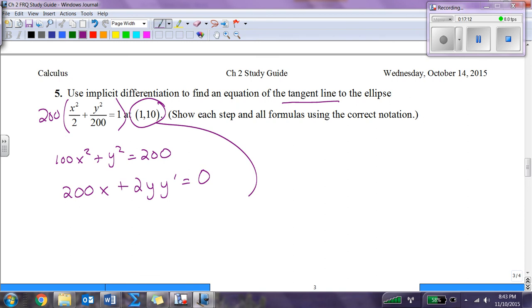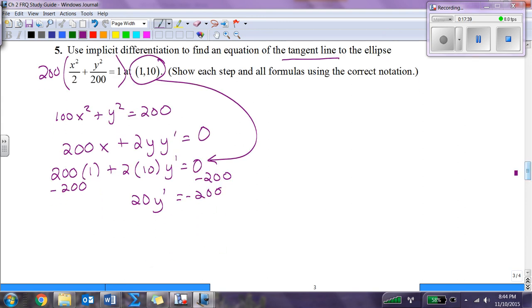At this point, I'm going to plug those numbers in. I get 200 times 1 plus 2 times 10 y prime equals 0. This gives me, I subtract 200 from both sides, so I have 20 y prime equals negative 200. If I divide both sides by 20, I get negative 10 is y prime. This is my slope. My equation is y minus 10 equals negative 10 times x minus 1. That is my final answer.